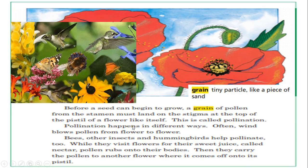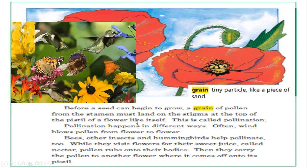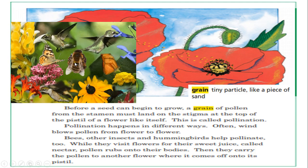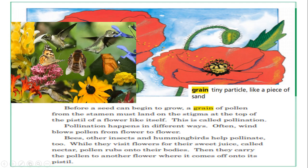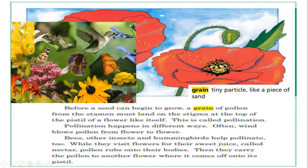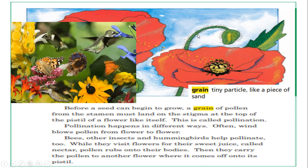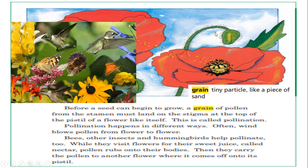This is how they help in pollination. So the first method is when the wind blows away the pollen, and the second method is when hummingbirds, bees, and other insects help pollinate. They try to reach for the nectar, the pollen gets on their bodies, and once they travel to another flower, it comes off.